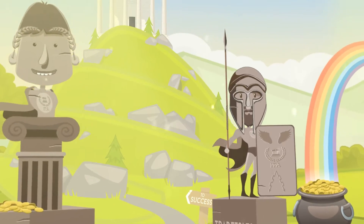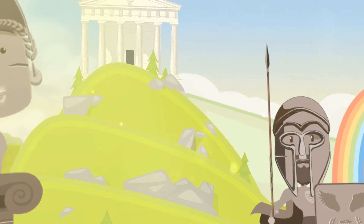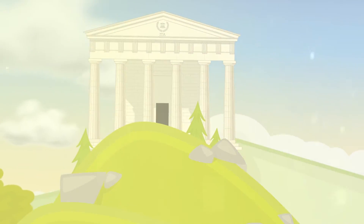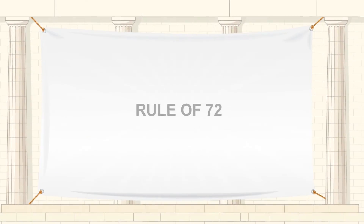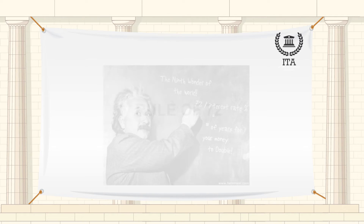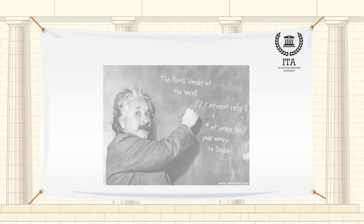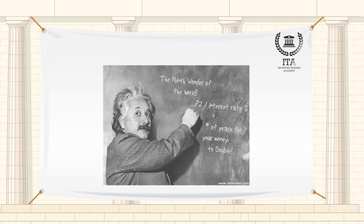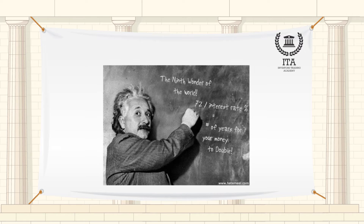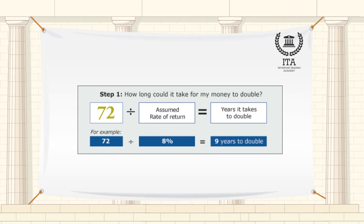Welcome to the Investors Trading Academy talking glossary of financial terms and events. Our word of the day is Rule of 72. The Rule of 72 is a shortcut to estimate the number of years required to double your money at a given annual rate of return. The rule states that you divide the rate, expressed as a percentage, into 72.